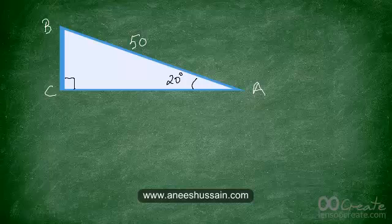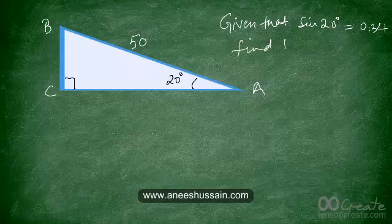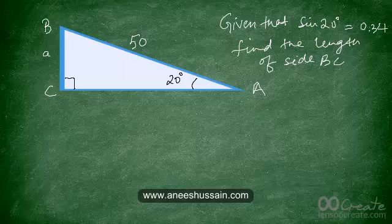In triangle ABC, angle A is 20 degrees and angle C is 90 degrees. The length of the hypotenuse is 50. Given that sine of 20 degrees is equal to 0.34, find the length of side BC, which we can mark as the small a.